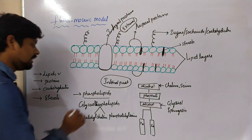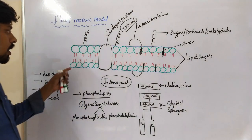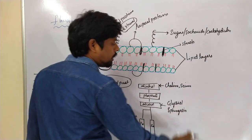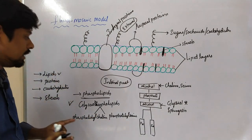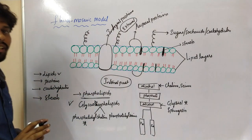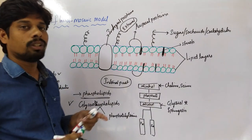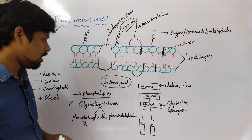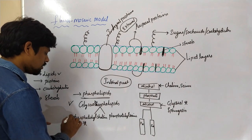Phospholipids are of two types: glycerophospholipids and sphingophospholipids. In the plasma membrane, glycerophospholipids are more abundant than sphingophospholipids. Among glycerophospholipids, phosphatidylcholine is more abundant in the plasma membrane. If asked which phospholipid is most abundant, the answer is glycerophospholipids — and specifically phosphatidylcholine.